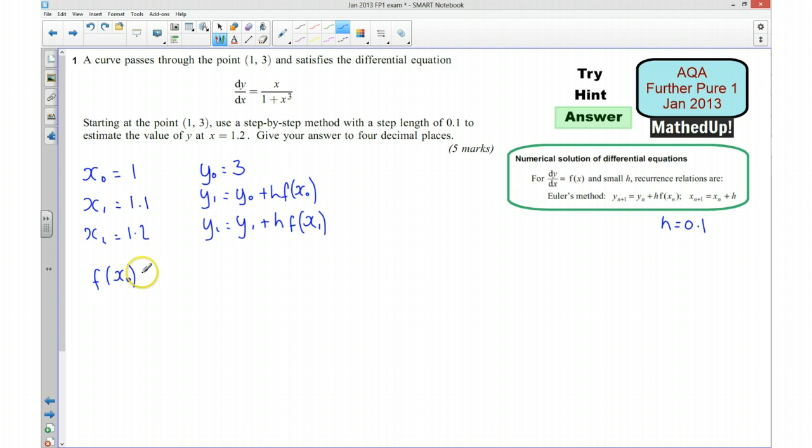So I've got f of x0. Well, that's going to be what happens when I put 1 into this function here, or into this function here. So that's going to be 1 over 1 plus 1 cubed. So that's going to be a half, which is 0.5.